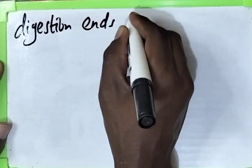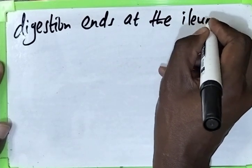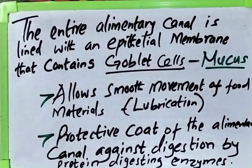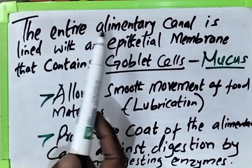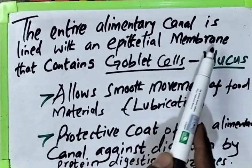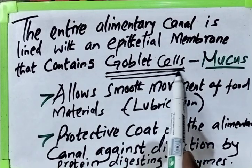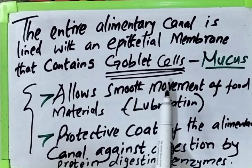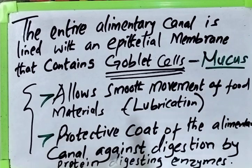Then it is true to say that digestion ends at the ileum. Now, one very crucial point about mucus: the entire alimentary canal is lined with an epithelial membrane that contains goblet cells. These cells secrete mucus. The functions of mucus include: number one, it allows smooth movement of food materials — that means lubrication — so food moves through the alimentary canal because of the presence of mucus.